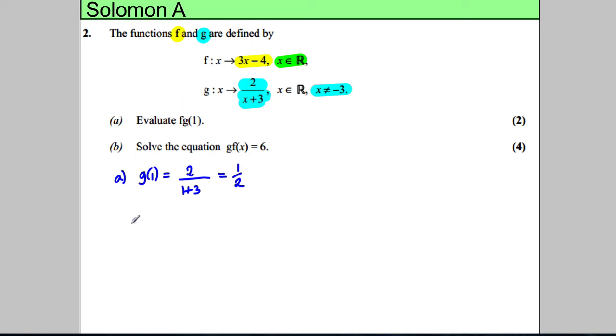And then we want to work out f of g of 1. So f of g of 1 would therefore be f of a half. So we need to substitute a half into this function. So it would be 3 multiplied by a half take away 4, which is 3 over 2 take away 4. So 3 over 2 take away 4, and 4 is 8 over 2. So that's going to be negative 5 over 2. So f of g of 1 is negative 5 over 2, or negative 2.5 if you want to decimalize it.